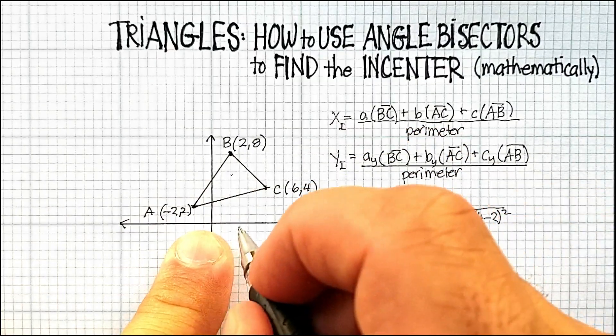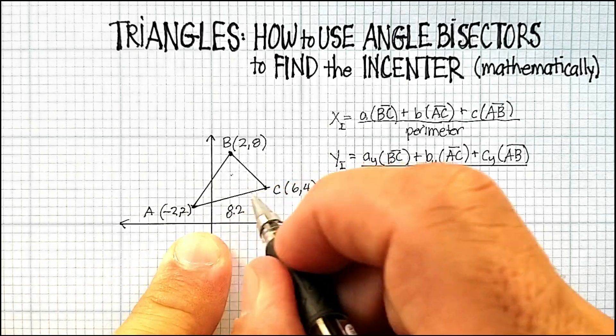And the square root of 68 is actually approximately 8.2. And that's for side AC. So let's just go over here. And I'm going to put in 8.2 for that distance.